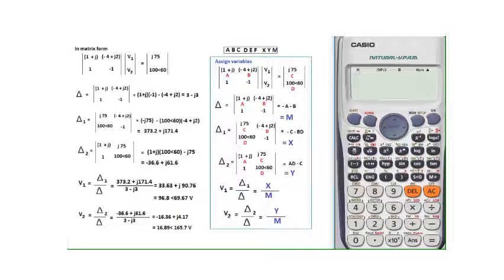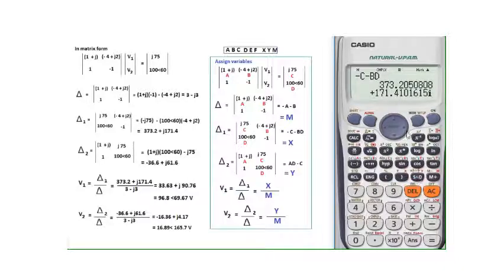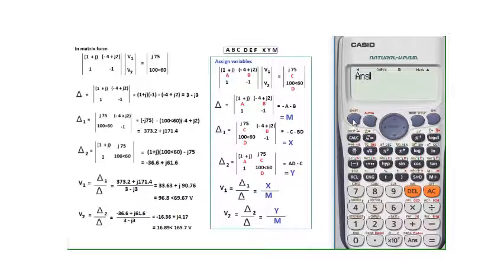Now Δ1 = −c − bd. Enter: −ALPHA C − ALPHA B × ALPHA D, then press equals. Press SD if the result is not clearly visible. The value is approximately 373.2 + 171j. Store this answer as X using SHIFT STORE.